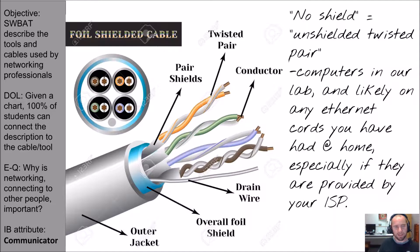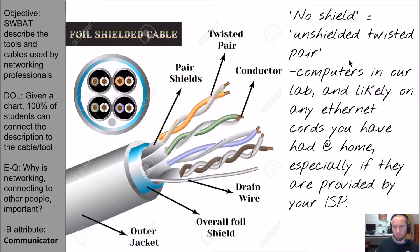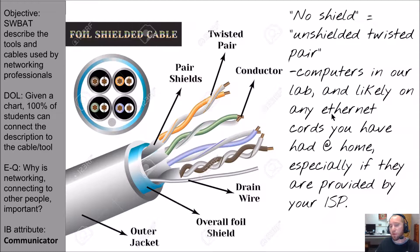Let's look at the basic cable that makes all this magic happen. This is a foil shielded cable — you don't necessarily have to have this blue shielding. If you hear of 'unshielded twisted pair,' you're hearing about a cable that doesn't have the shield. Computers in our lab have these cables, and likely any Ethernet cords you come across are using these CAT cables — CAT 5, CAT 6, etc. The word 'Ethernet' is a little misleading because it's the protocol, not the physical thing itself.